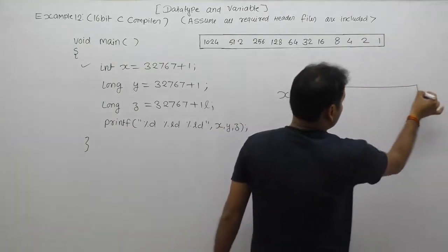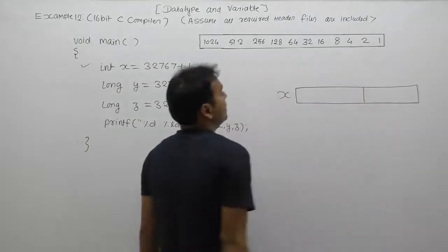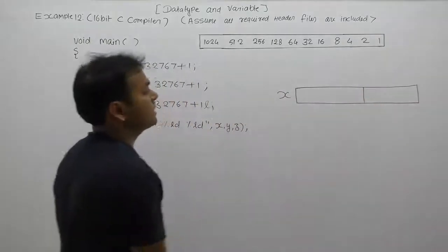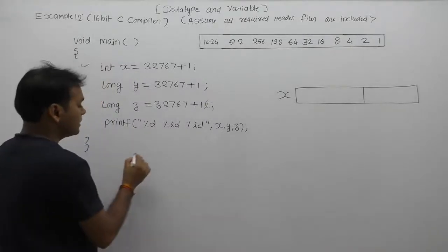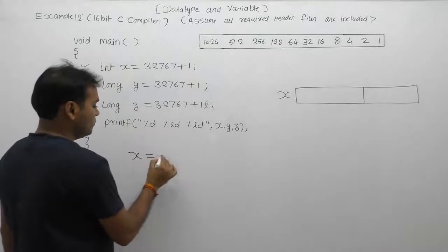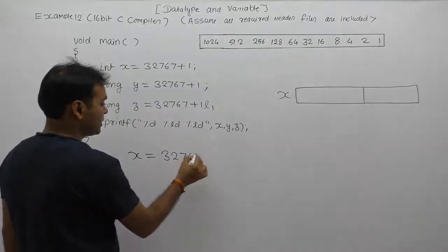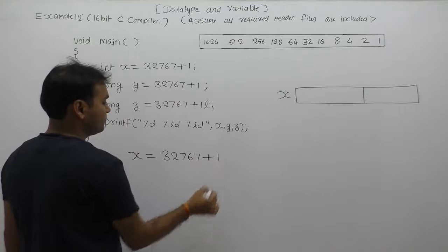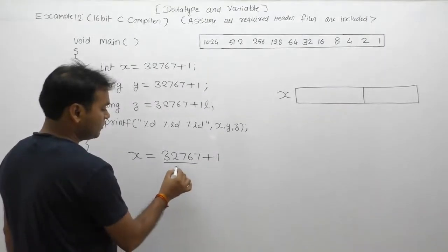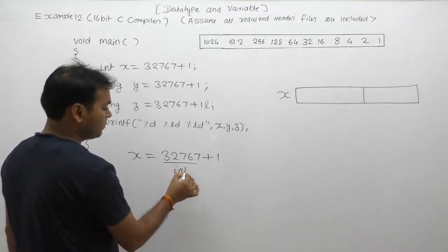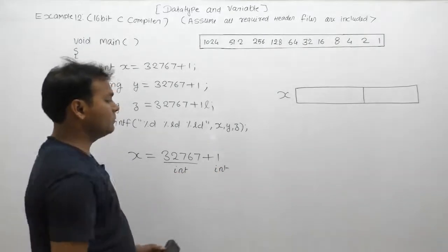In the case of variable x, how many total bytes are allocated? According to a 16-bit C compiler, the size of an integer is two bytes. Here we are assigning x equals to 32767 plus 1. The first operand is an integer, and the second operand is also an integer.